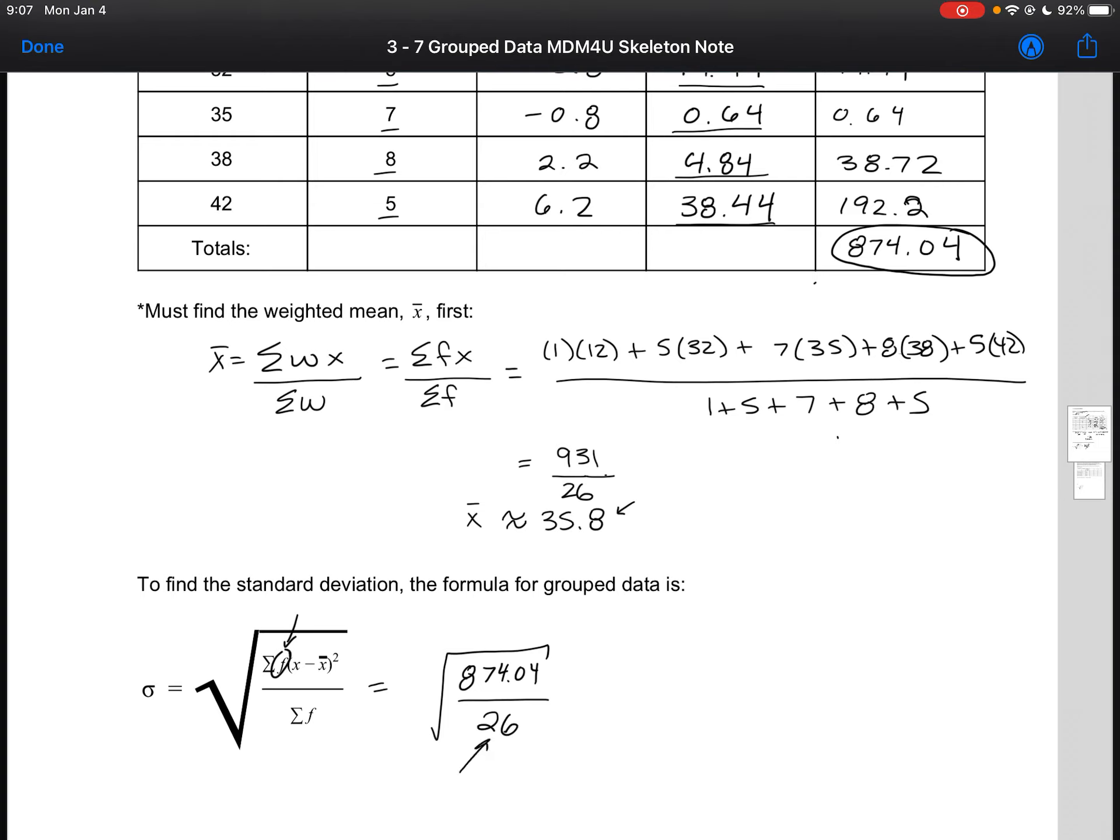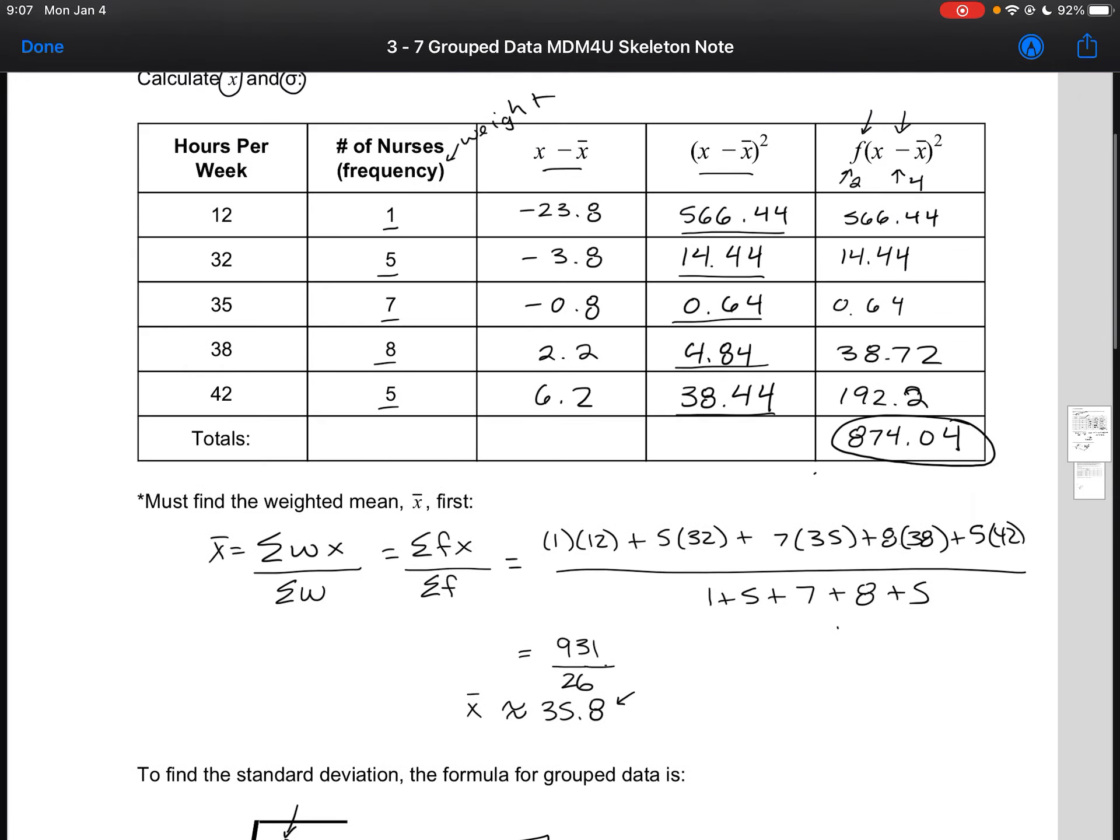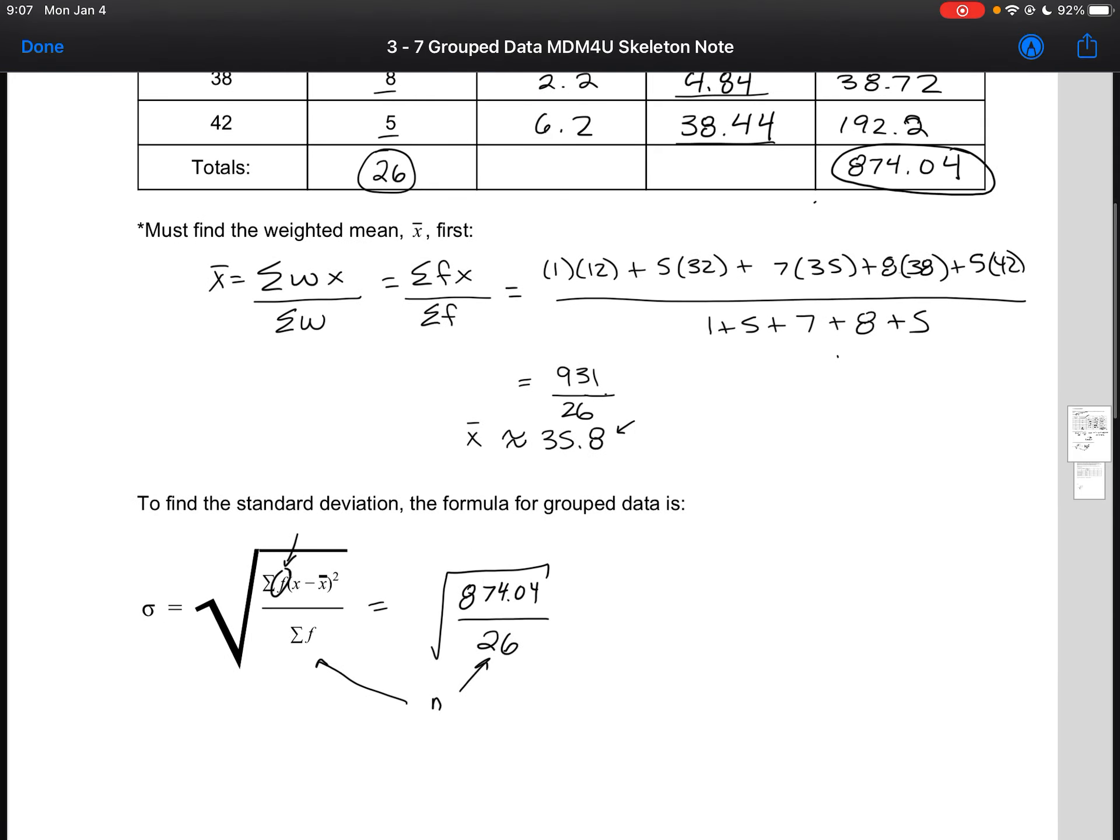Now where do we get our 26 from? This is our total number of data points, or the sum of our frequency, which is going to be the total of our second column here. So 1 plus 5 is 6, 6 and 7 is 13, 13 and 8 would be 21, and then 21 and 5 would be 26. That is where those two numbers come from.